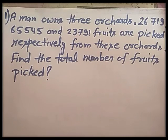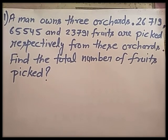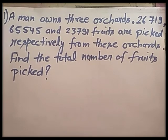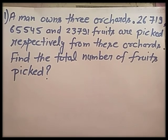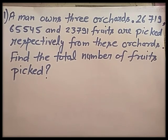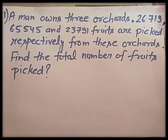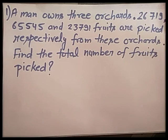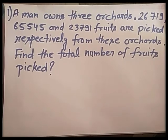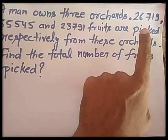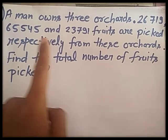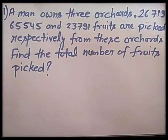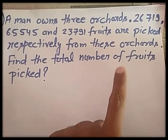First example: A man owns 3 orchards. 26,719, 65,545, and 23,791 fruits are picked respectively from these orchards. Find the total number of fruits picked. You can see in this question, a man owns 3 orchards and the number of fruits are given respectively. The question is to find the total number of fruits, which means addition.